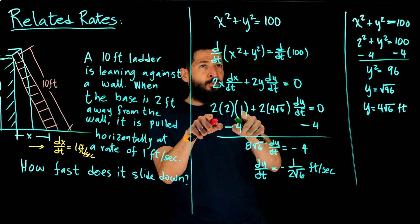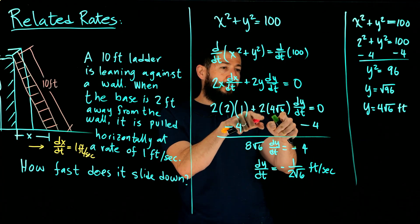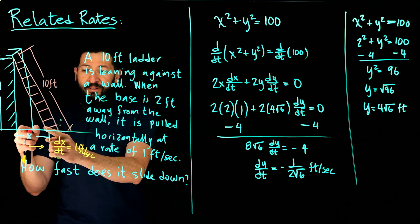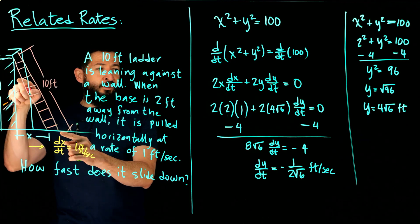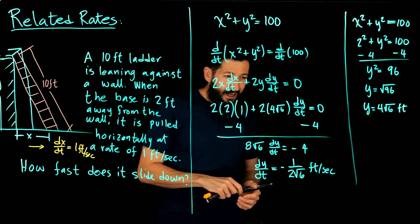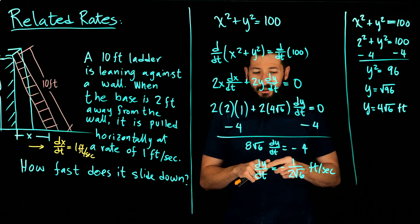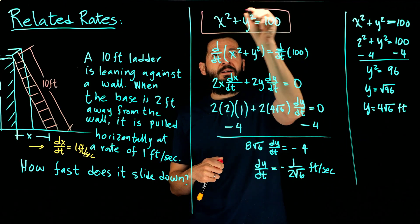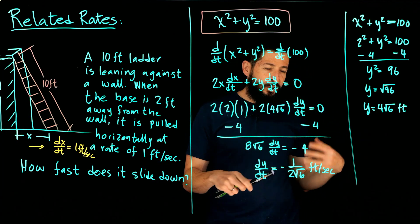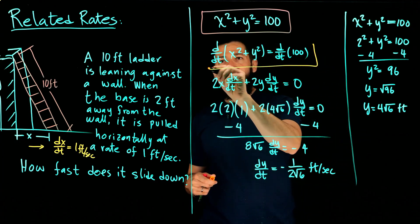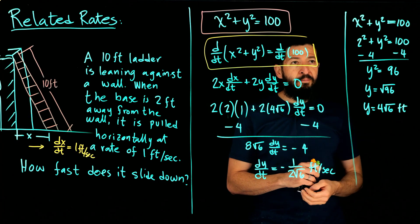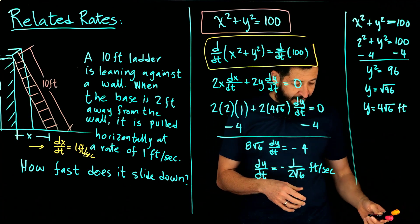The result is negative, confirming the ladder is sliding down. At this position, as you move the base away at 1 foot per second, the top slides down much slower. Toward the end as the ladder gets more horizontal, it will drop faster. That's the idea of related rates: find a geometric relation between the variables, differentiate to get the rate equation, then solve — sometimes needing to compute missing values from the original constraint first.